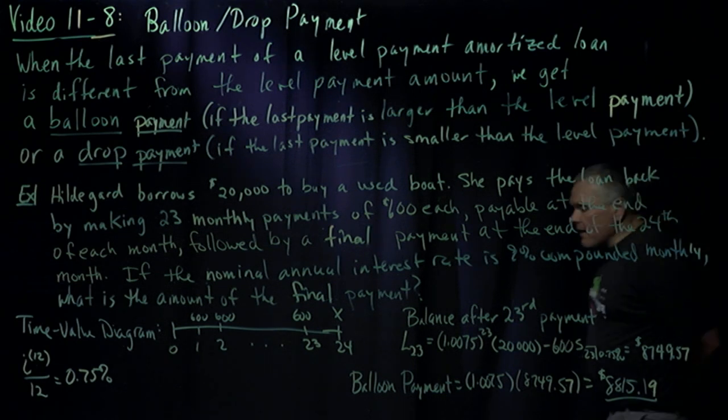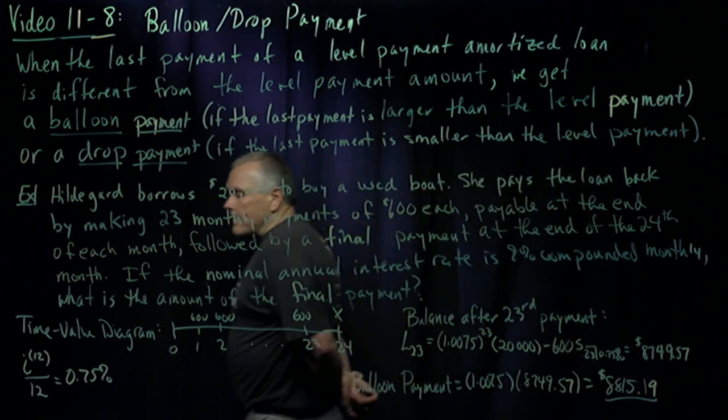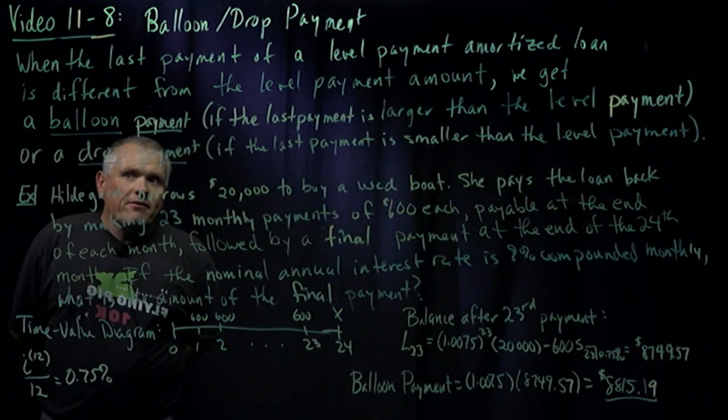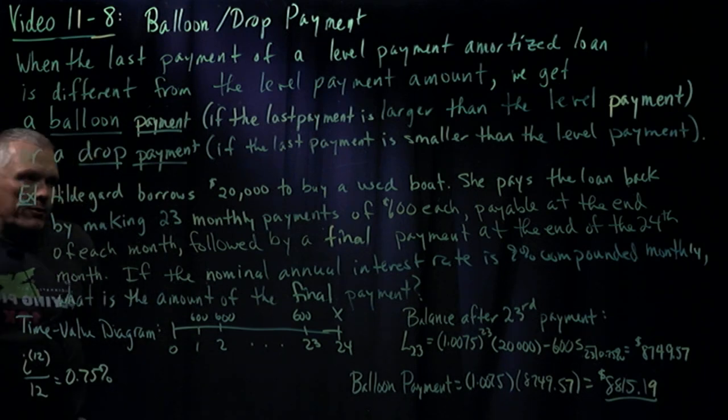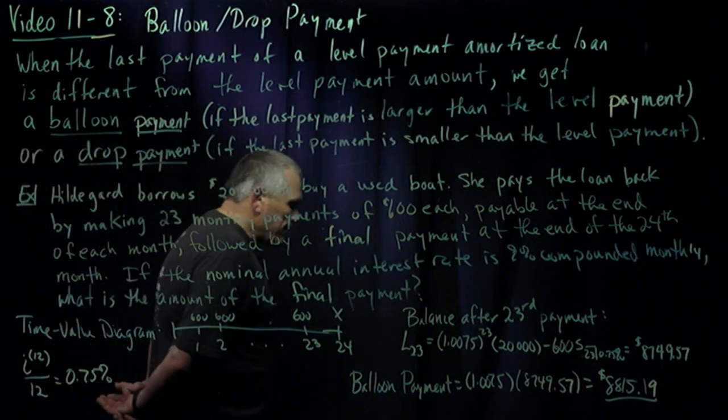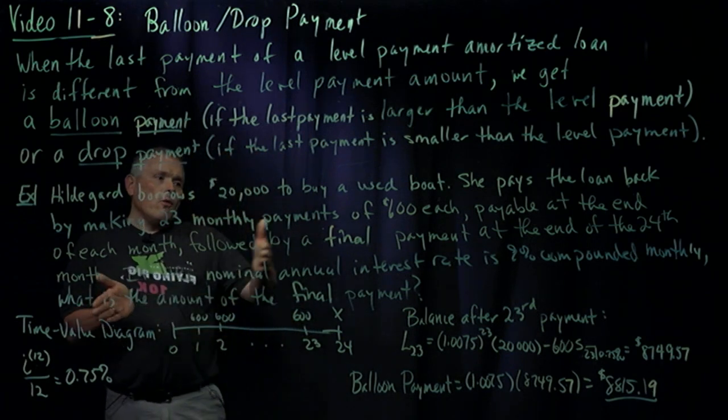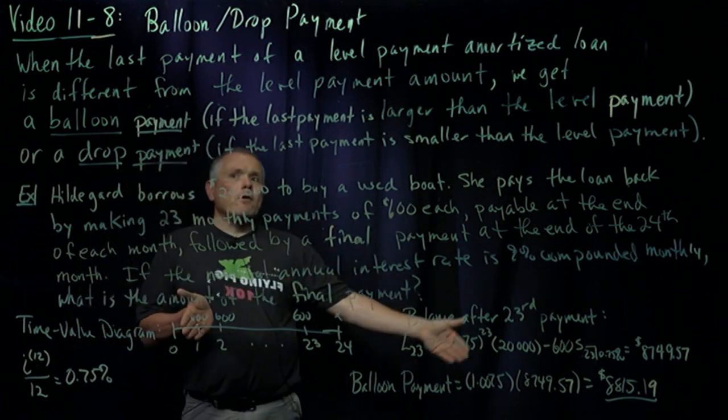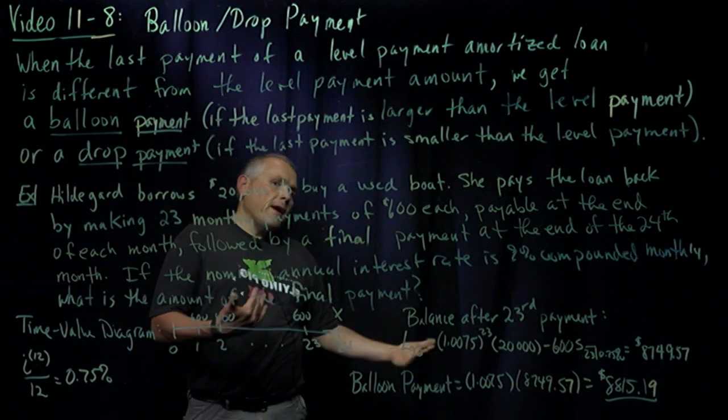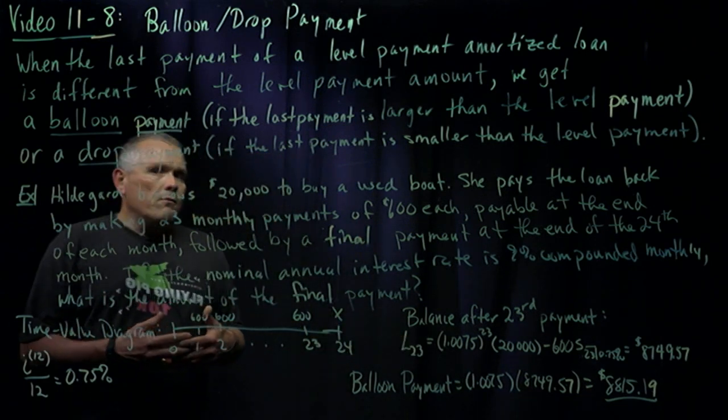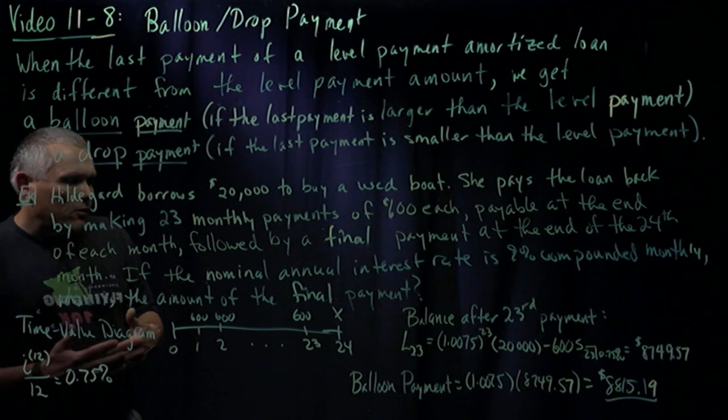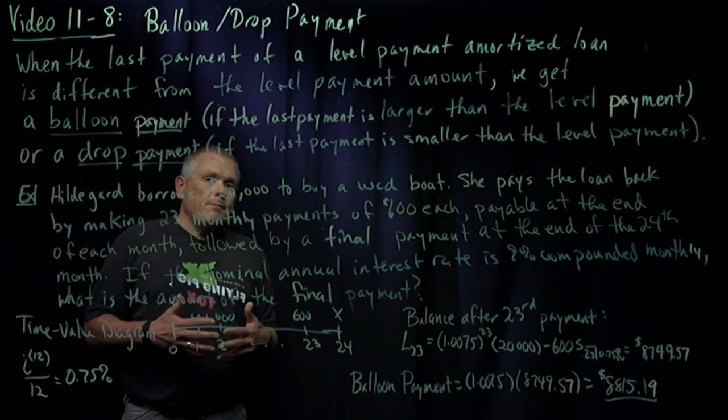Okay, so balloon payment, drop payment are payments that are talking about the very final payment of an amortized loan. The amortized loan will have the exact same payment that you make all the way up until the very final payment, and then you pay a different amount. It could be that you've financed it so that your payments are smaller than you would actually need to pay to pay off the balance at the end.